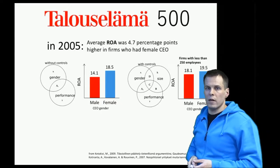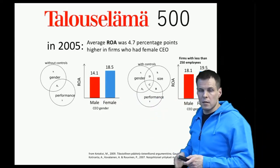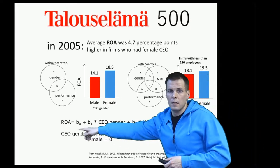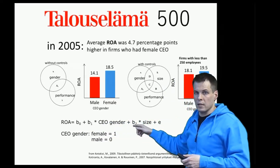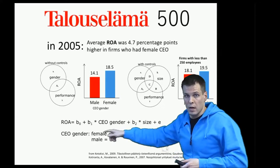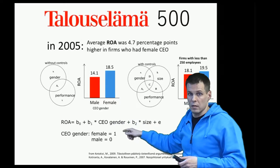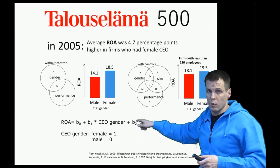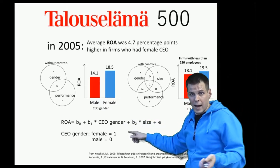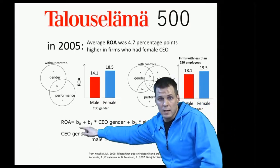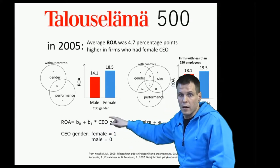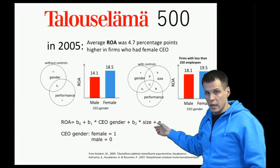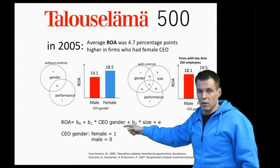To take that into consideration, we don't normally apply matching — instead we apply a statistical model. We say that return on assets depends on CEO gender and company size, so we can express return on assets as a linear function of CEO gender and size. We multiply CEO gender (female is one, male is zero) and company size by coefficients beta one and beta two, then we ask the computer to give us estimates for beta zero, beta one, and beta two so that we can predict return on assets as well as possible. We then interpret the results to see whether the gender effect actually exists.